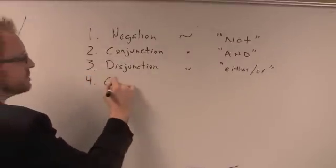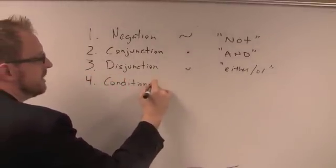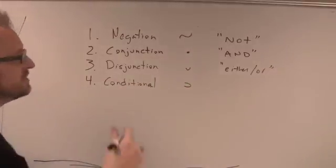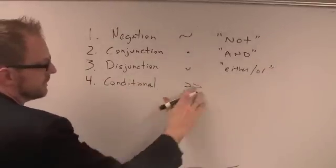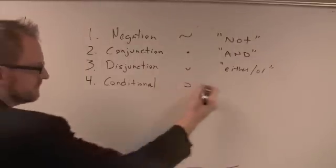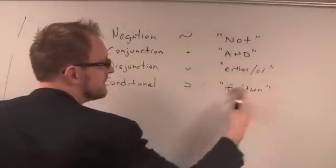The fourth is the conditional, which in the Hurley text is symbolized with the horseshoe, and we're just using a greater-than symbol online. That basically means if-then, so that's an if-then relationship, a conditional relationship.